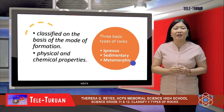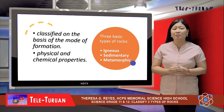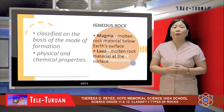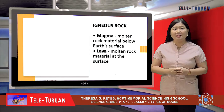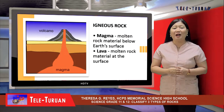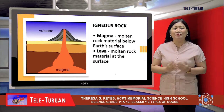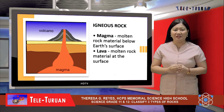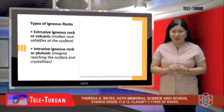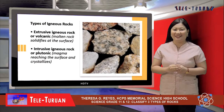Generally, rocks are classified on the basis of the mode of formation, and some of these physical and chemical properties are inherent in how the rocks are formed. When molten rock material cools and solidifies, it becomes an igneous rock. Molten rock material below Earth's surface is called magma, whereas molten rock material at the surface is known as lava. When molten rock solidifies at the surface, it is called extrusive igneous rock or volcanic.